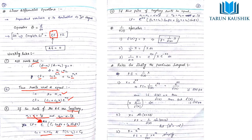If both pairs of imaginary roots are equal, then the CF becomes (c₁ + c₂x)cos(βx) + (c₃ + c₄x)sin(βx), multiplied by e^(αx) for the real part.